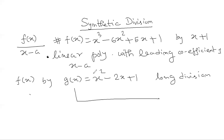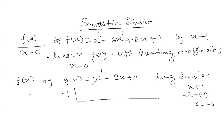So how do you divide? Here you are dividing f(x) by x plus 1. First you have to get the value of a. Since x plus 1 can be written as x minus of minus 1, the value of a is minus 1, and we put it here. Next, we list all the coefficients of the powers of x in descending order, starting with the highest possible power, which is x cubed.